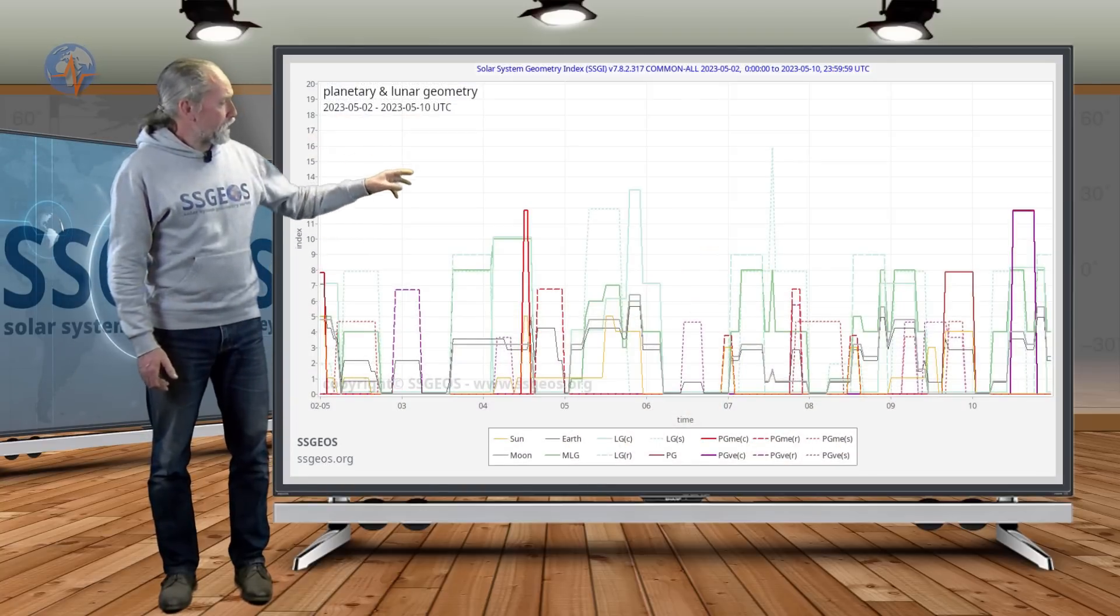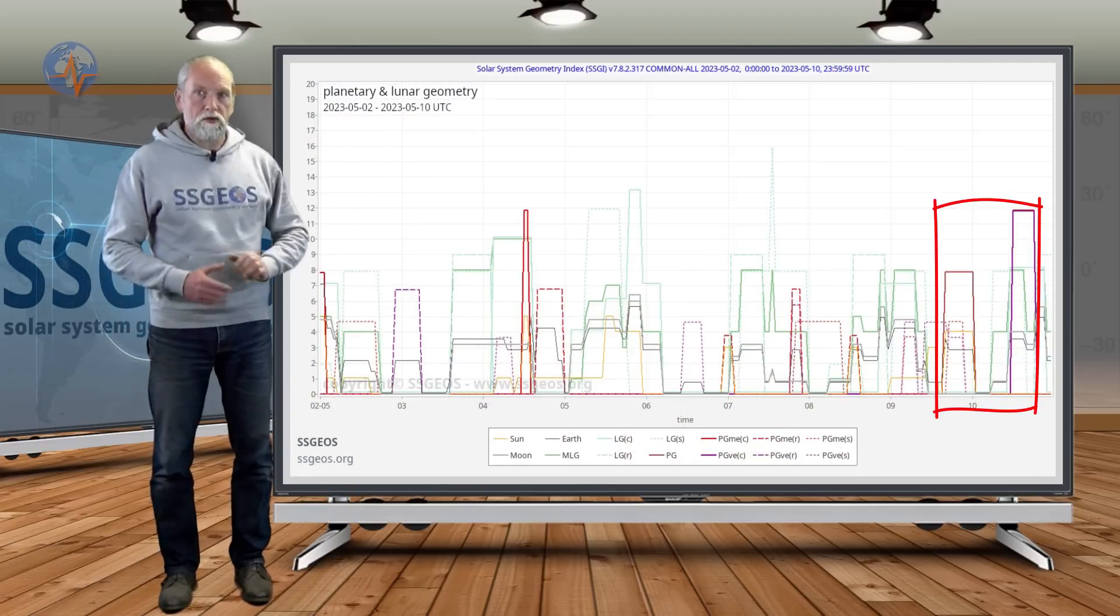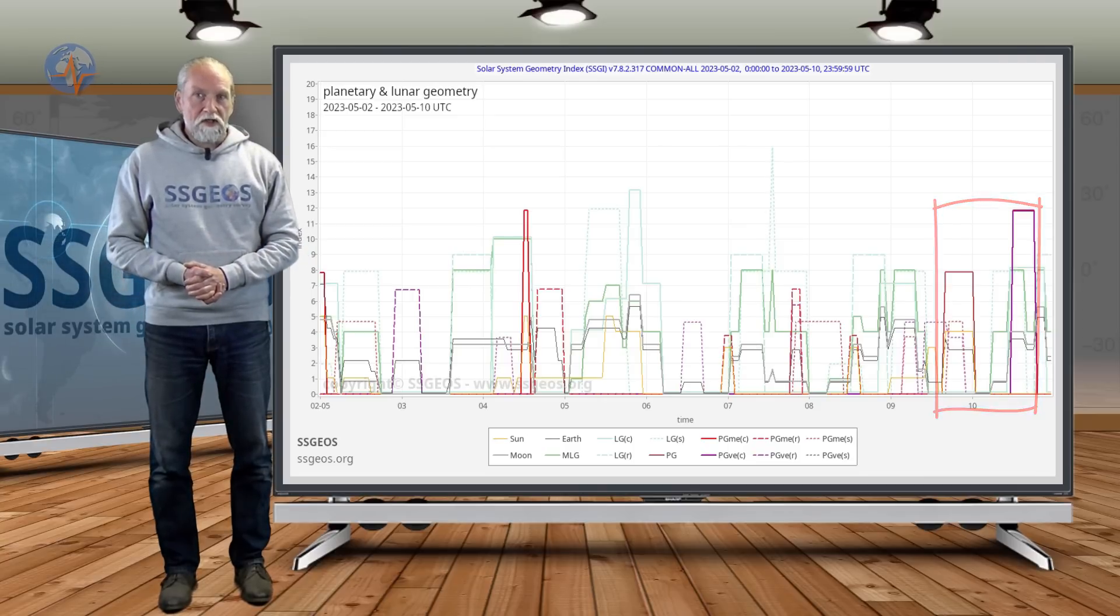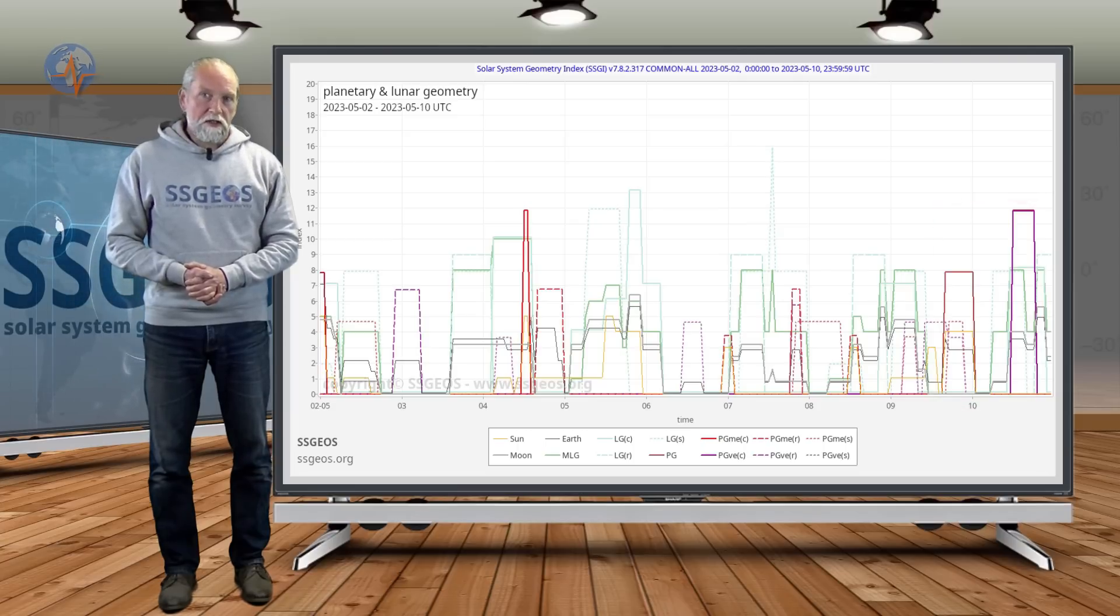A quick look at the SEGI graph also tells us that we are going to have two planetary conjunctions on the 9th and 10th, that will be a convergence, which is probably going to be more critical but I will discuss that in one of the next updates.